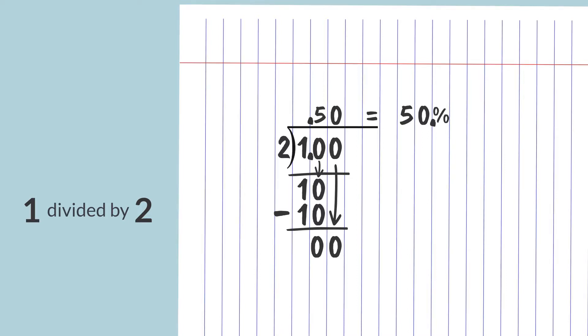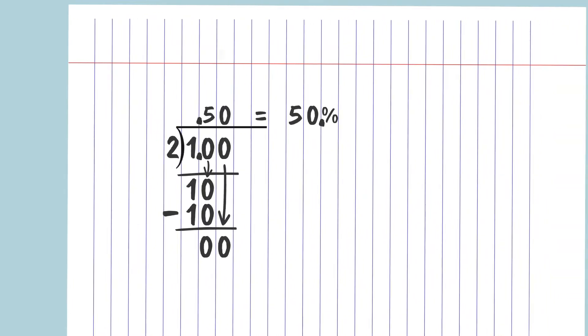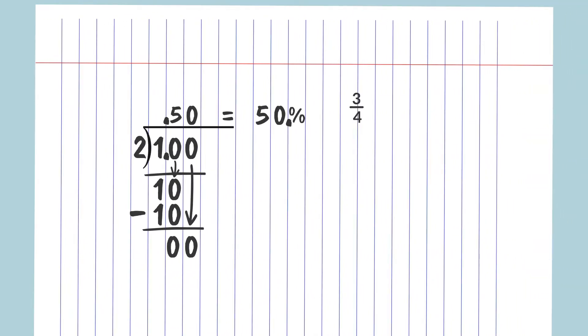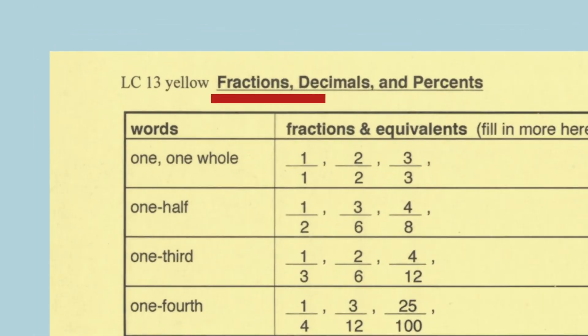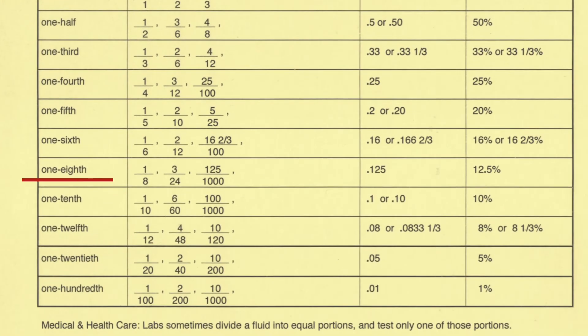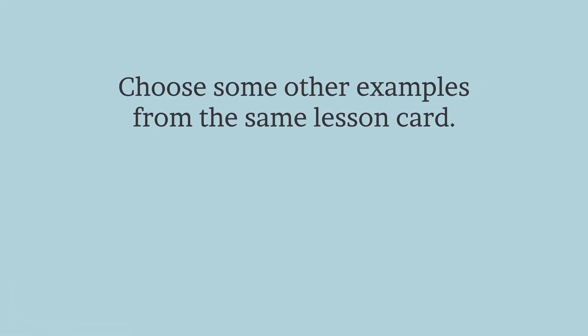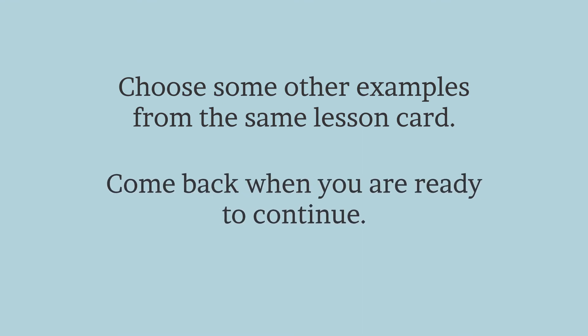In a moment, you should pause while you try more examples on your lined paper, turned sideways. For each fraction you choose, do the division problem, then convert the decimal answer to a percent by moving the decimal point two spaces to the right. You should choose fractions from the lesson card titled Fractions, Decimals, and Percents and check your answers using that lesson card. Start with one-eighth. Practice converting one-eighth to 0.125 then to 12.5 percent. Next, choose some other examples from the same lesson card. Come back when you are ready to continue.